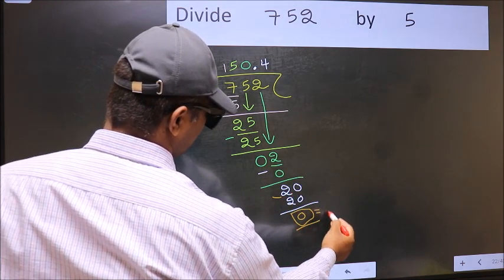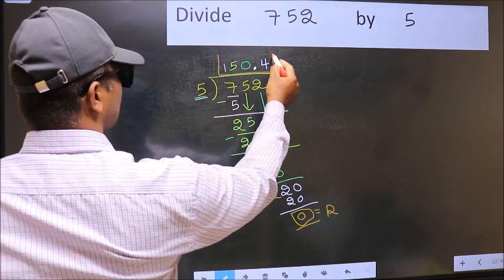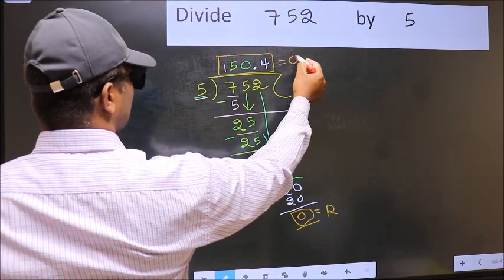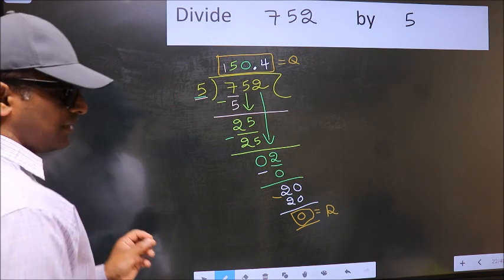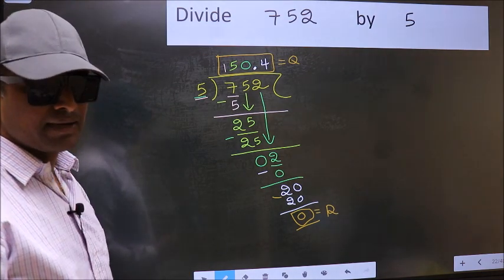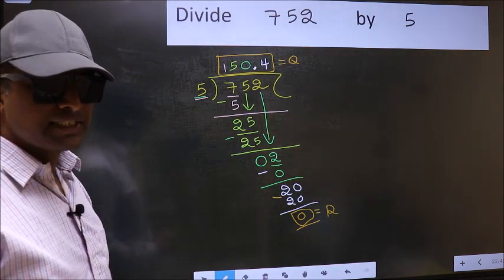So this is our remainder. And this is our quotient. Did you understand where the mistake happens? You should not do that mistake.